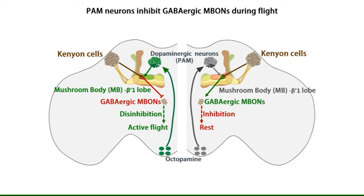Continuous release of GABA from the identified mushroom body output neurons presumably helps maintain the default state of flight inactivity or rest. Our data suggests that insect mushroom bodies function as an action selection center where the duration of an appropriate motor output, in this case flight, is chosen based on the continuous reception of sensory inputs. This is similar to the function of the basal ganglia in mammals.